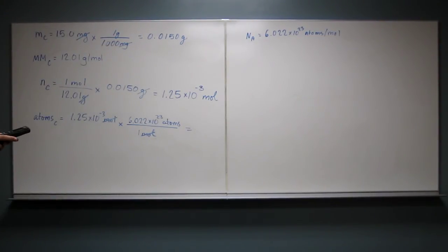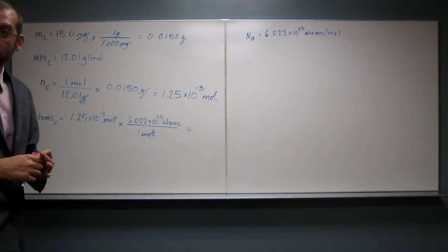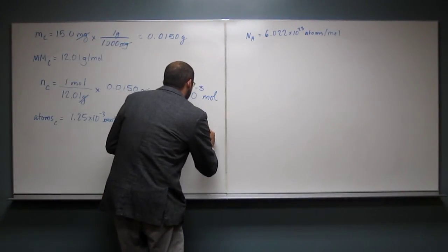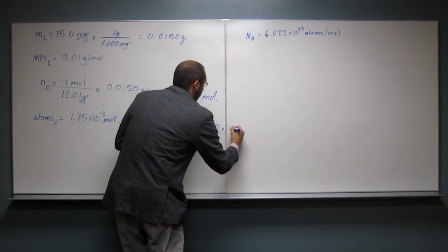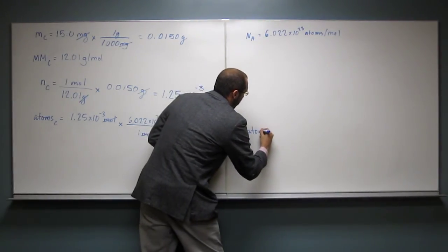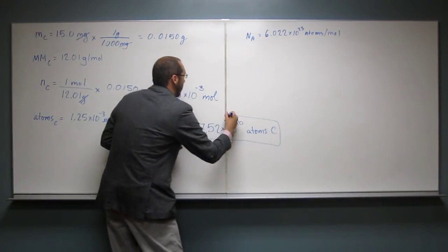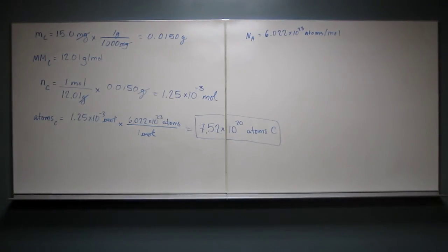And then we'll just put that on our calculator. So multiply that last entry by 6.022. And so this is going to be a lot of atoms. 7.52 times 10 to the 20th atoms of carbon. So that's a lot of atoms of carbon in 15 milligrams. Does that make sense how to do it? Yeah.